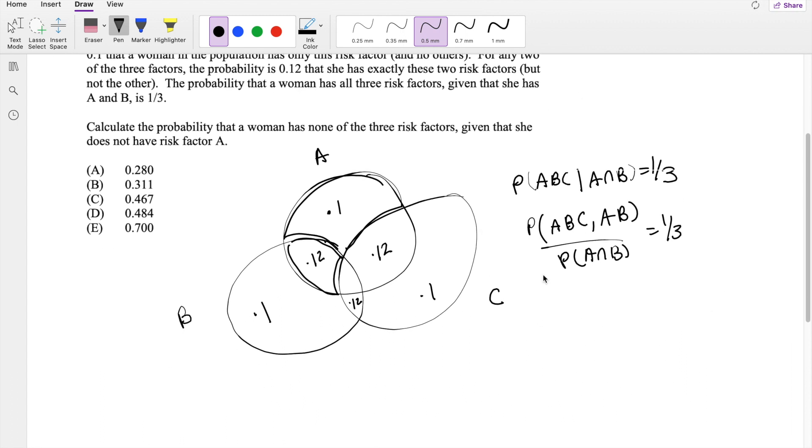So probability of A, B, and C and probability A and B, we can just simplify that to A, B, and C given probability of A and B. So probability of A and B will be this part right here, which is exactly equal to 0.12 plus A, B, and C, this part right here, which is equal to 1/3.